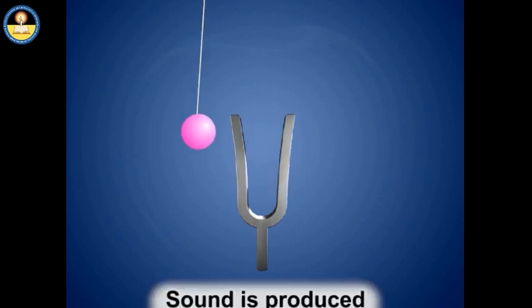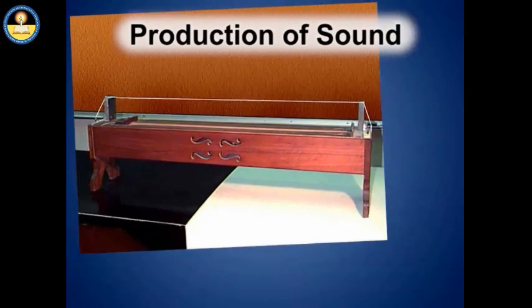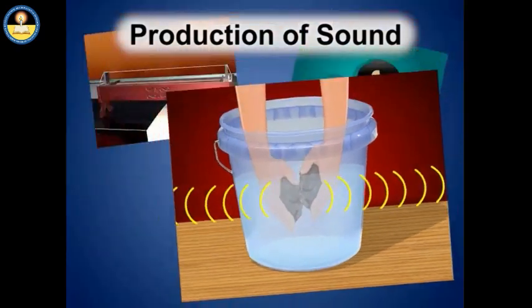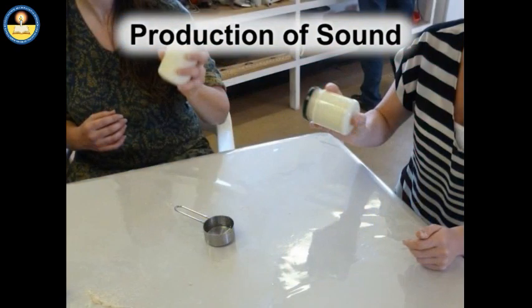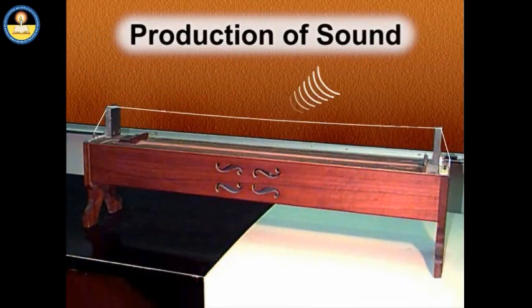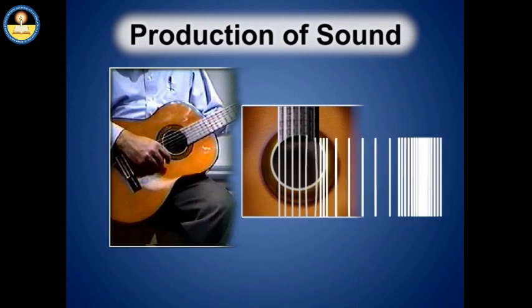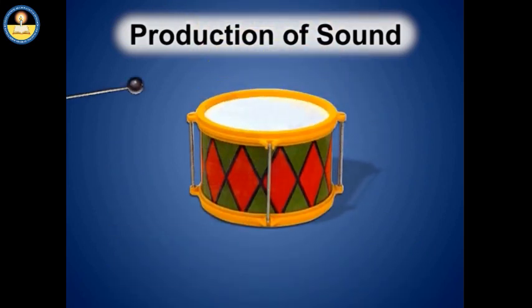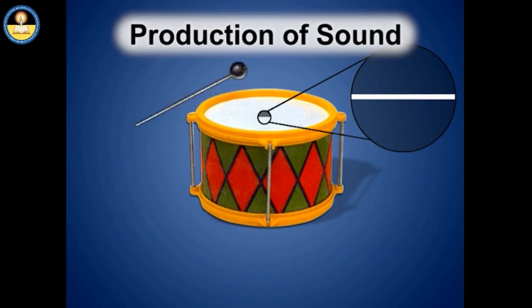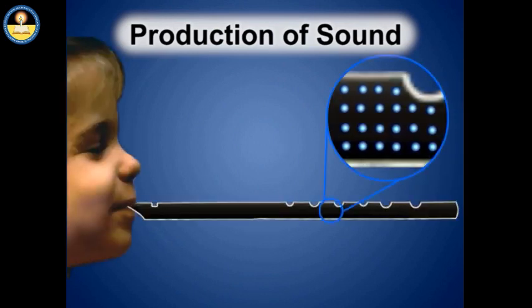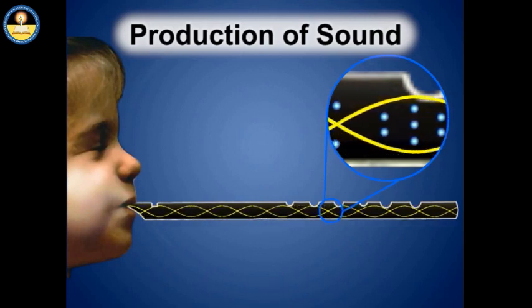This activity shows that sound is produced by vibrating objects. We can also produce sound by plucking, scratching, rubbing, blowing, or shaking different objects. It can be seen that plucking of a wire produces sound. In the same way, when we blow into a flute, it also produces sound. Here, sound is produced by a vibrating air column.